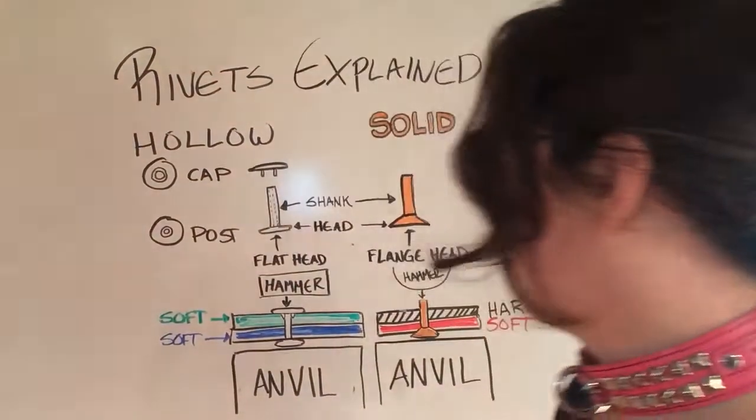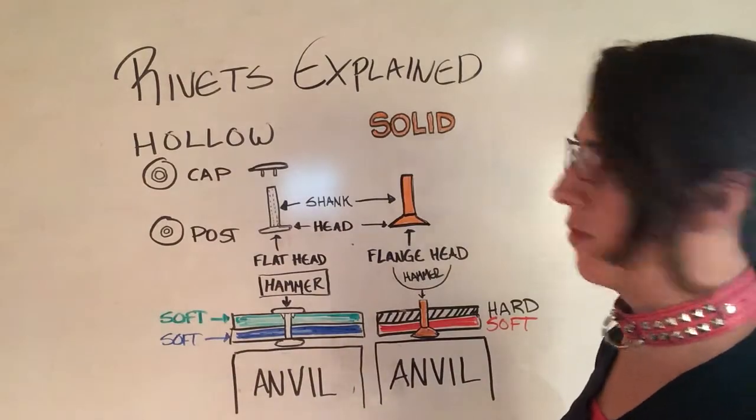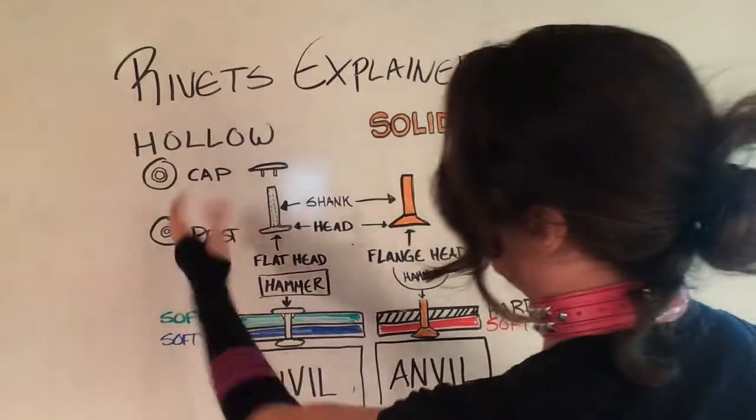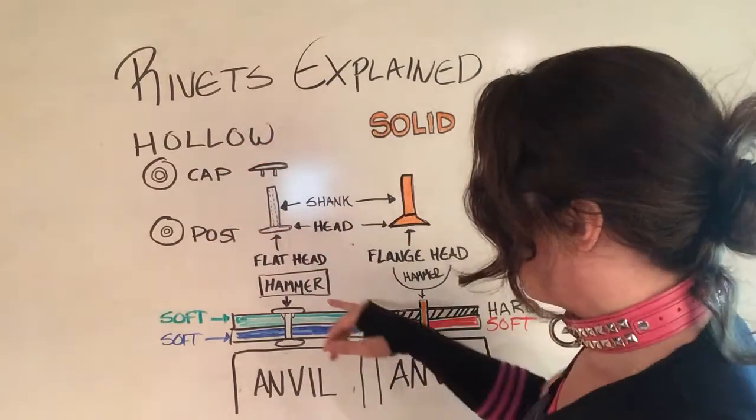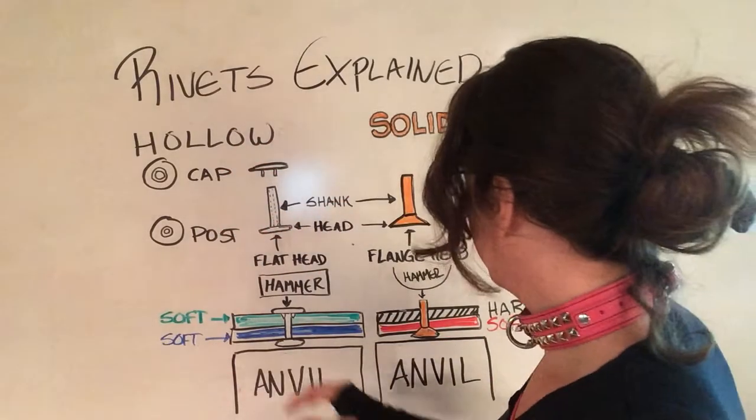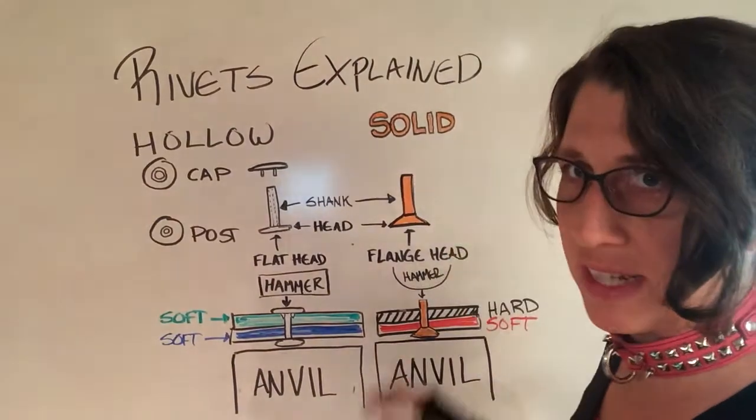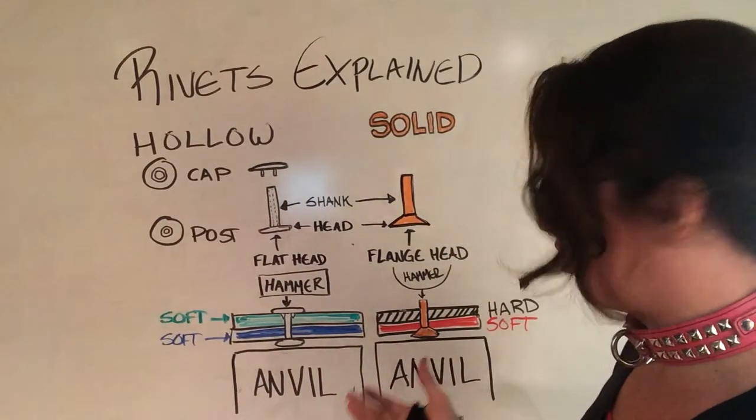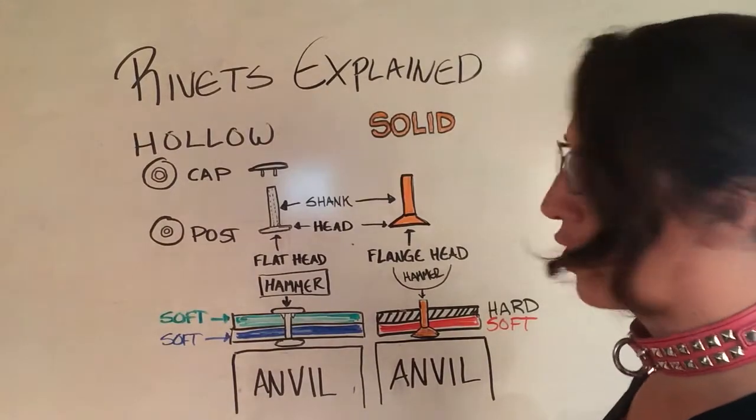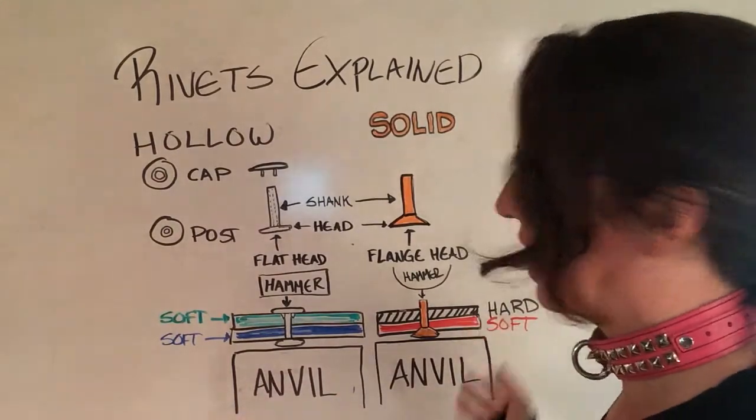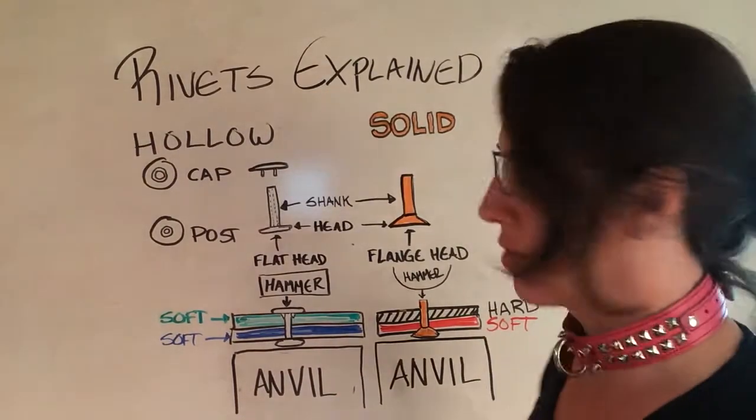So they're color coordinated so you can fully understand what's happening. We're trying to look at the assembly when the cap and the post come together for the hollow rivet. And that's generally used for softer materials. And when we have the solid rivets, those are used to join a soft material to a hard material. So we're going to go through the anatomy and then bring it all back and hopefully you'll know how the whole things are assembled.